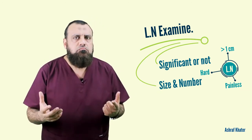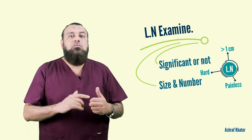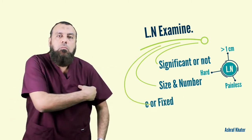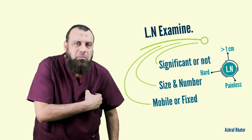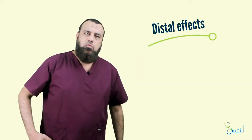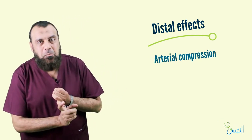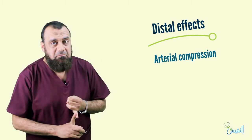A lymph node that is hard, more than one centimeter, and painless is suspicious for malignancy — suspicious of being metastatic. Also comment on the size, the number of lymph nodes palpated, and their mobility — whether they are mobile or fixed. You must comment on the lymph nodes to complete your palpation, and also comment on the distal effects of the swelling — for example, a swelling in the thigh requires searching for arterial compression manifested by ischemic signs.